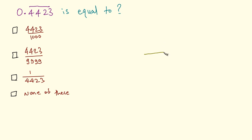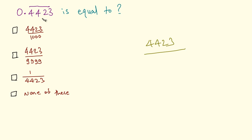In the numerator we would write the number without the decimal point. The number is 4, 4, 2, 3. Let's count the number of repeating digits: 1, 2, 3, and 4. So there are 4 repeating digits. In the denominator, 4 nines would come because there are 4 repeating digits.